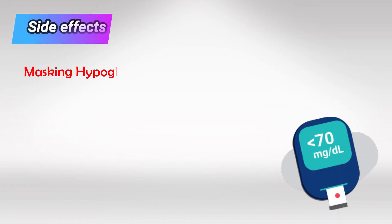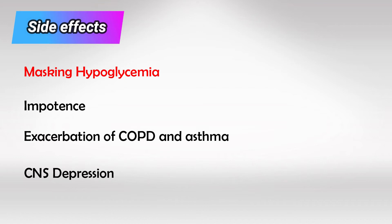Because they're beta blockers, they can mask the effects of hypoglycemia, which is something they love to ask about in the USMLE. Hypoglycemia slows down the body, heart, and brain, and so do beta blockers, so it's very difficult to know if the patient is hypoglycemic while taking them. They also cause impotence, exacerbation of COPD and asthma, and have sedation effects on the CNS.